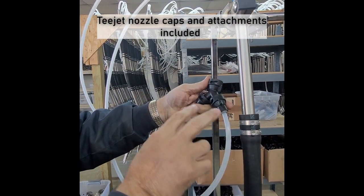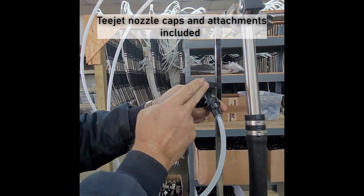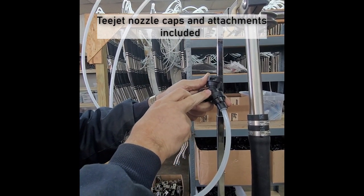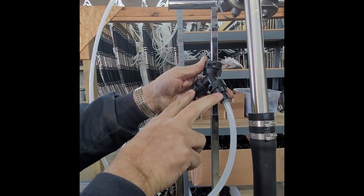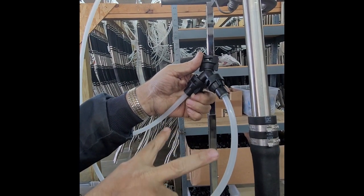When the nozzle hooks up to this, the fluid goes into here. Your orifice plates are going to be in these two caps here, so it's going to be a perfect distribution between these two hoses.